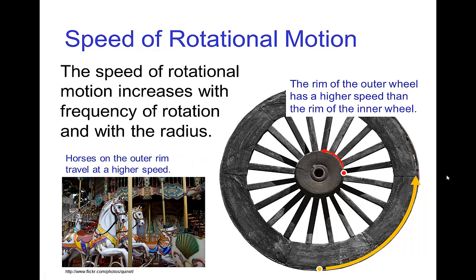Talking about rotation, the speed of rotation is larger for a point on the outer rim compared with a point on the inner rim. These two points complete one cycle in the same amount of time, but because the circumference is larger for the outer rim, that point is traveling at a higher speed. The same is true for the merry-go-round — horses on the outer rim travel faster than those on the inner rim, even though it takes the same time to complete one full rotation.